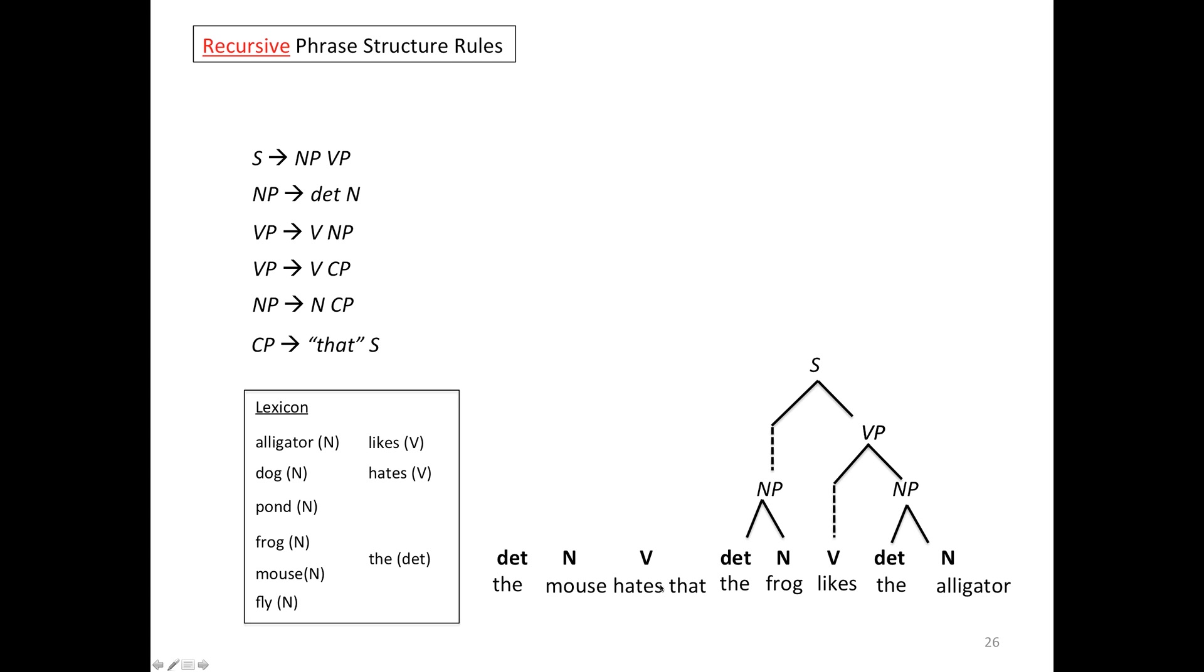So the meaning of that is something like, maybe this mouse is jealous because the frog likes the alligator. Maybe the mouse used to date the frog. Something like that. Frankly, I'm with the mouse here. I think the frog is probably in a pretty problematic relationship with this alligator. In any case, let's push on.